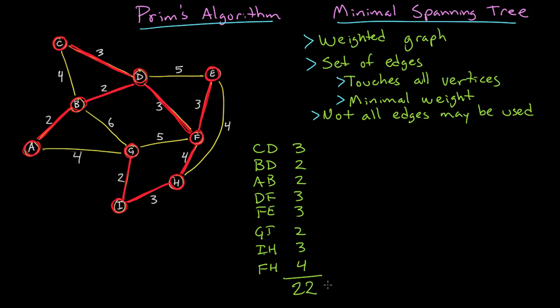As I said, the output of this algorithm is a set of edges. It's the set of the edges CD, BD, AB, DF, FE, GI, IH, and FH. That is a minimal spanning tree.